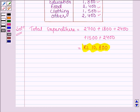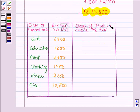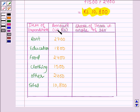In the first column we have written the items of expenditure: rent, education, food, clothing, other, and the total. In the second column we have written the amount spent on each — rent, education, food, clothing, other — and the total. In the third column we shall find the share of each item as an angle of 360 degrees.